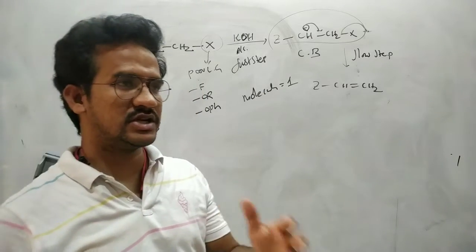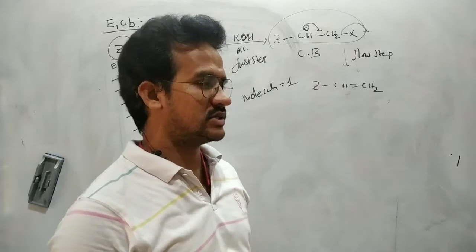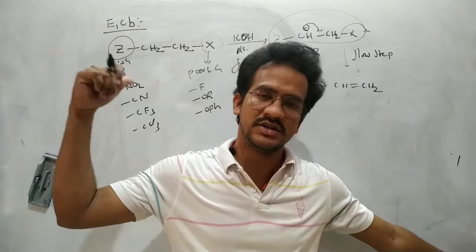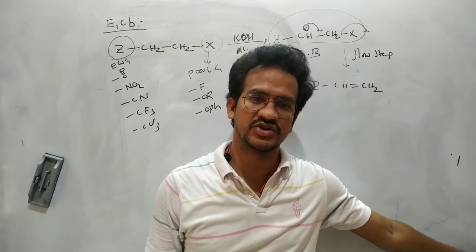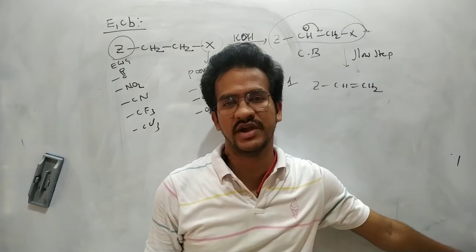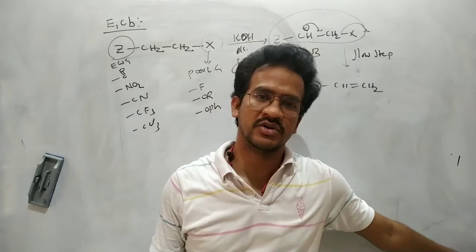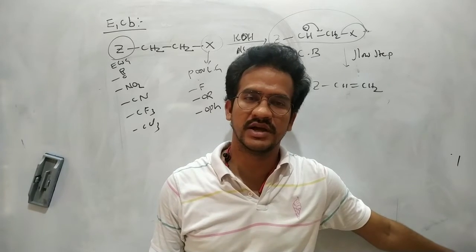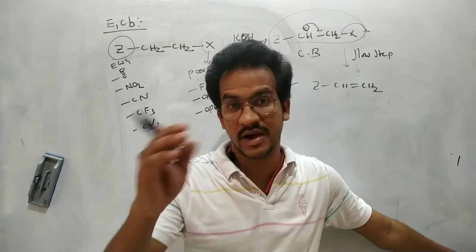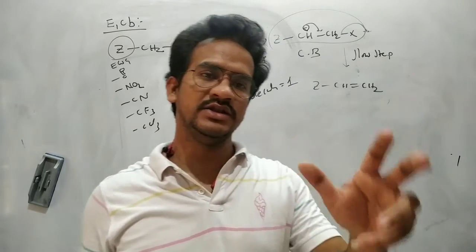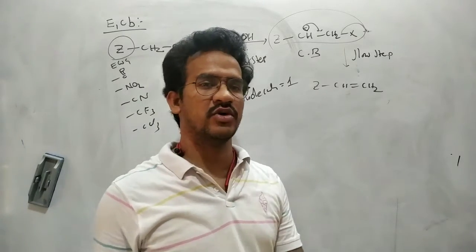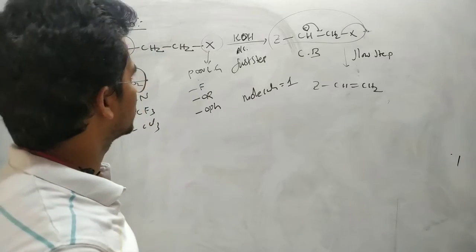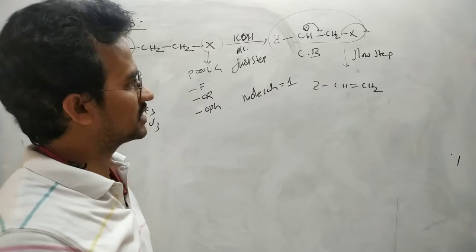This unimolecular elimination proceeds through conjugate base anion formation. In a general E1 reaction, the reaction proceeds through formation of a carbocation. But here, this E1CB reaction proceeds through formation of a carbanion, which is the conjugate base. That is why this reaction is called unimolecular conjugate base elimination.